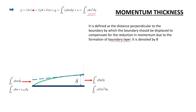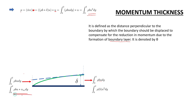For section 1, it will be rho times b times u times u-infinity dy, because the mass flow rate multiplied by u-infinity gives m-dot times u-infinity — there is no boundary layer effect, so the velocity is u-infinity itself. You can see that rho times b times u times u-infinity dy is greater than rho times b times u squared dy.